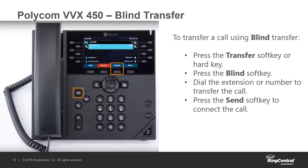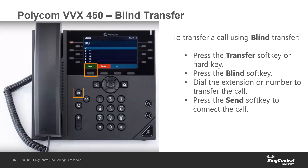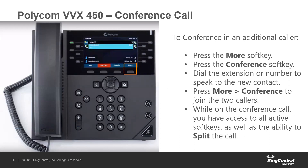You can switch the default transfer type. If you do more blind transfers, I recommend going into your phone settings and changing that. Another option is conferencing an additional caller. You can have two additional people — so it's you plus two others on the physical phone. If you're setting up a larger conference call, you'll want to do that outside of the phone. This is more of an on-the-fly conference. Unfortunately, you can only bring in one additional person with this option.